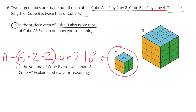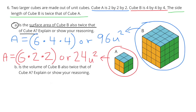Number six: two larger cubes are made out of unit cubes. Cube A is two by two by two; Cube B is four by four by four. The side length of Cube B is twice that of Cube A. Part a: is the surface area of Cube B also twice that of Cube A? Explain or show your reasoning.